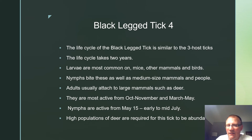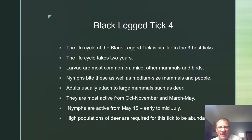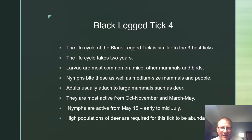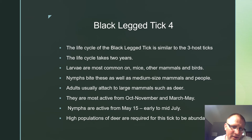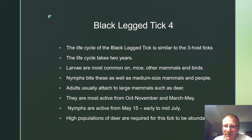The life cycle of the black-legged tick is similar to other three-host ticks and takes two years. Larvae are most common on mice, other mammals, and birds. Nymphs bite these as well as medium-sized mammals and people. Adults usually attach to large mammals such as deer. Black-legged ticks are active from October through November and March through May. Nymphs are active from May 15th to mid-July. High populations of deer are required for this tick to be abundant.